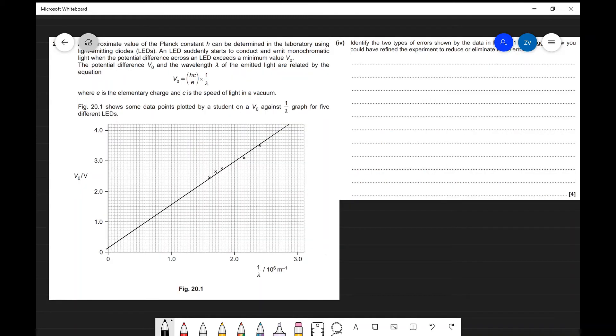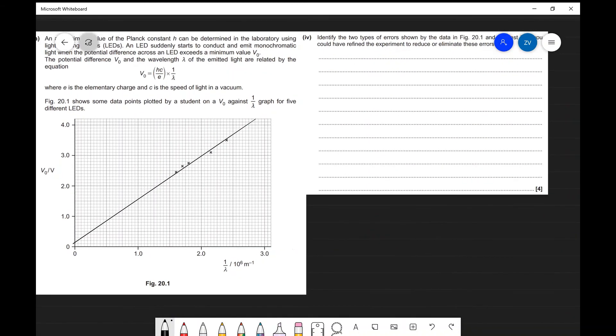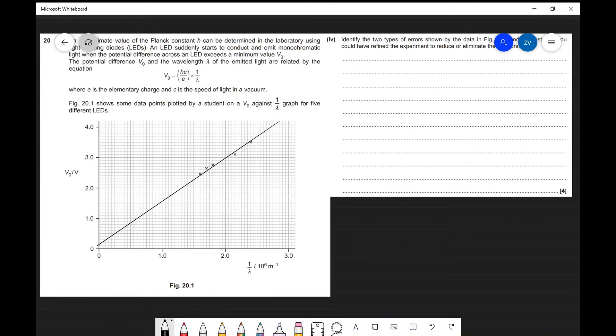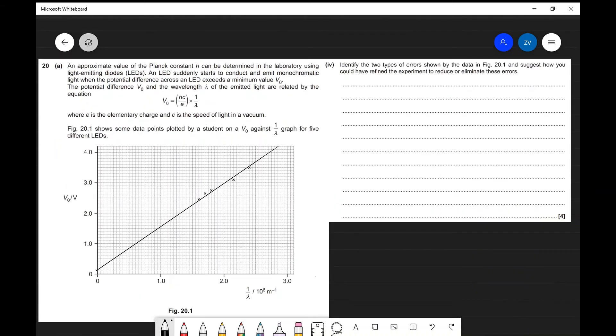Now let's have a look at another example. This one here is question 20 from OCR's exploring physics paper from 2018. This is a question on the Planck's constant experiment. However, we're just going to focus on one little part of it, which is part four on identifying the types of error shown by this figure 20.1 and what we can do to refine this experiment. When we're asked to identify two types of errors shown by the data, we know that those are going to be probably random errors and systematic errors.